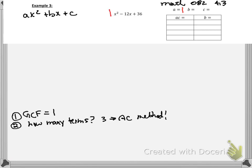Remember, 1 is like a ninja number. He's always there, even if you don't see him. Okay, then I'm looking for my B. Remember, the sign always goes with a number. So B is negative 12. And then I'm looking for C, which is 36.